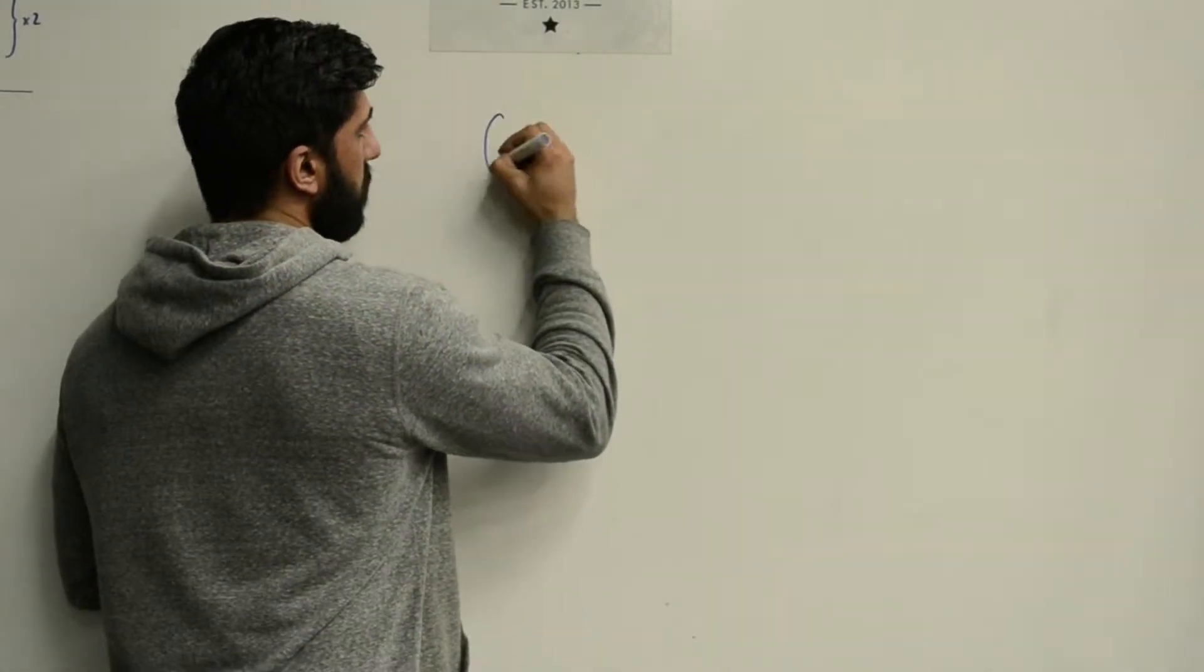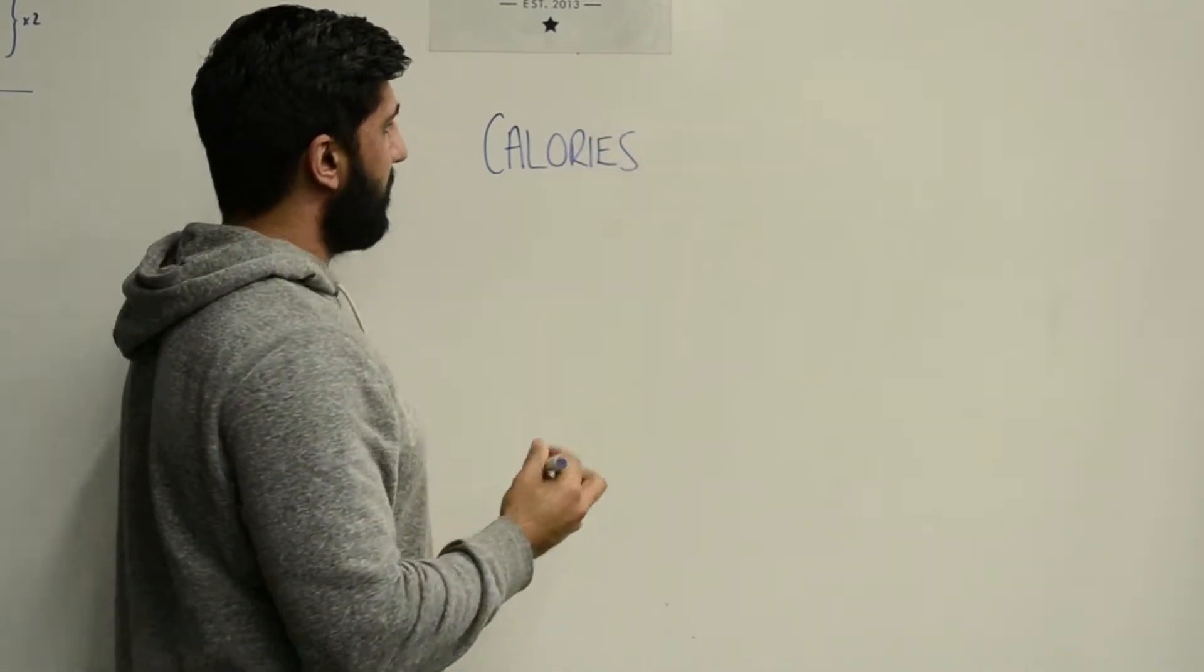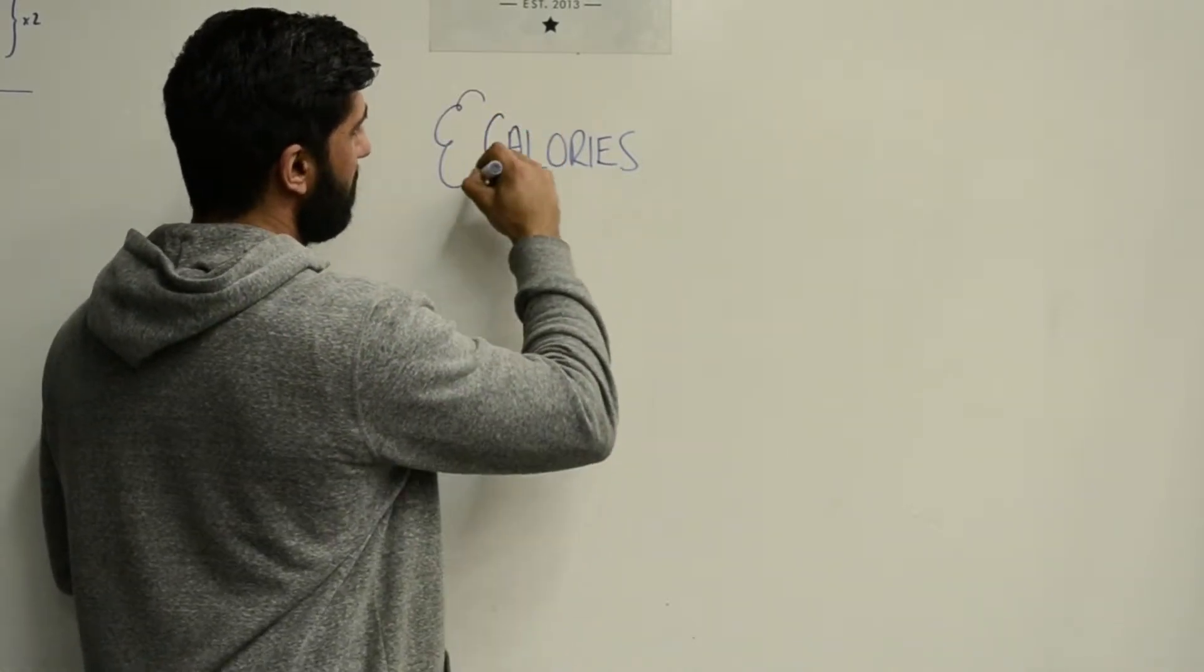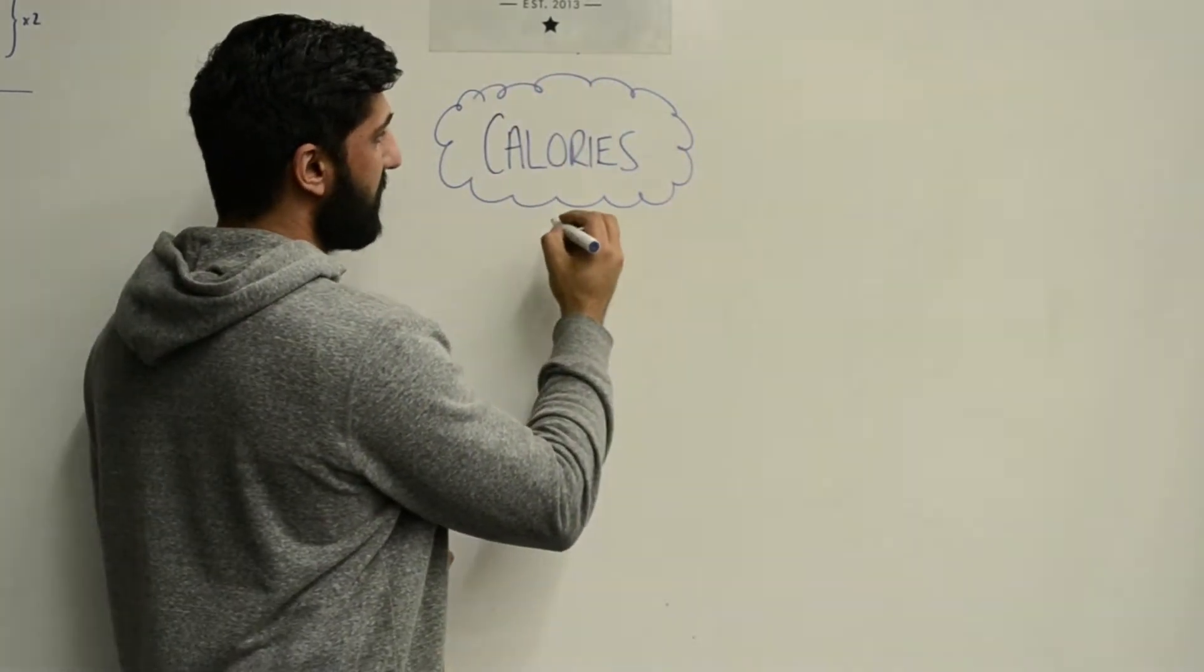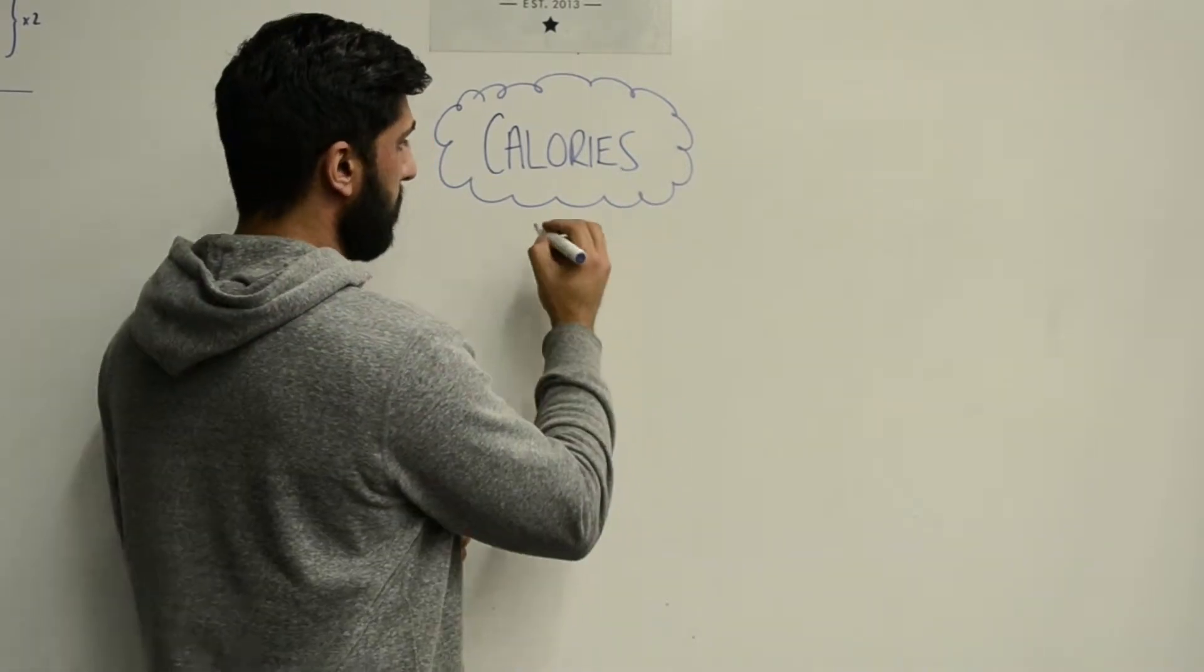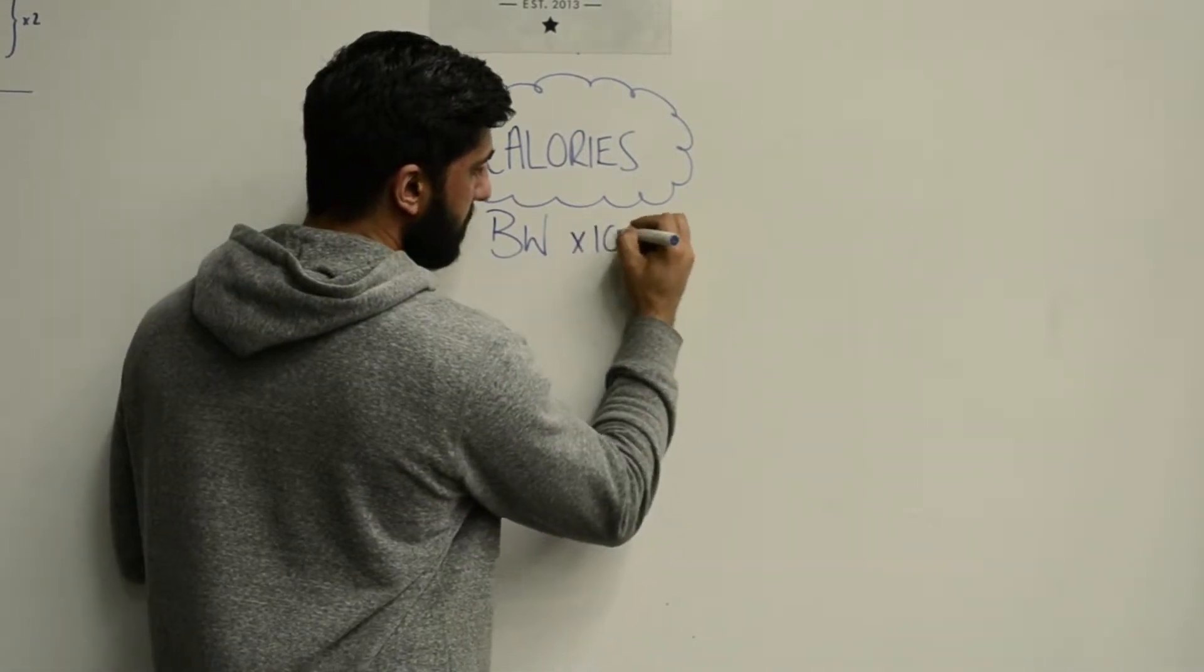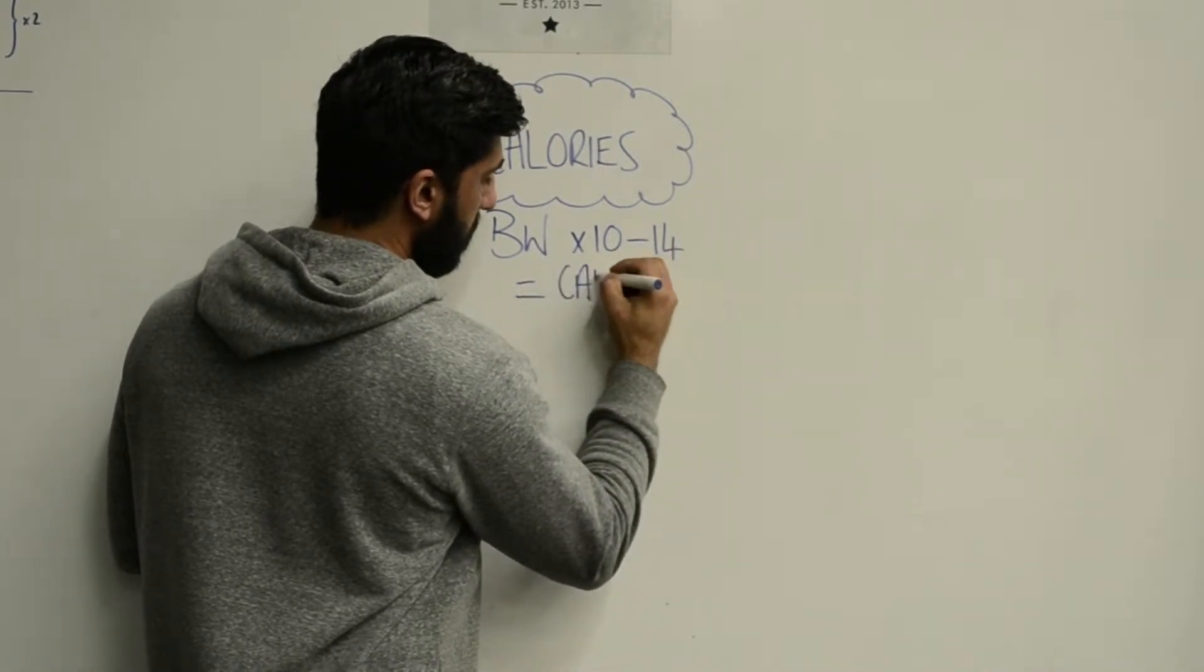The first thing that you need to do is work out your total calories. We're going to do that by multiplying your body weight in pounds by 10 to 14. So body weight times 10 to 14 is going to equal your calories.